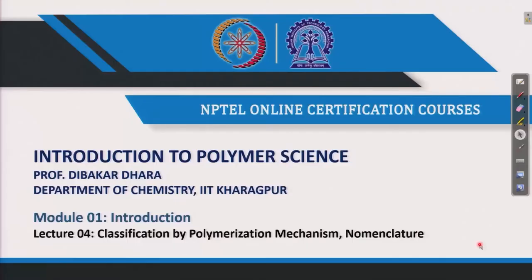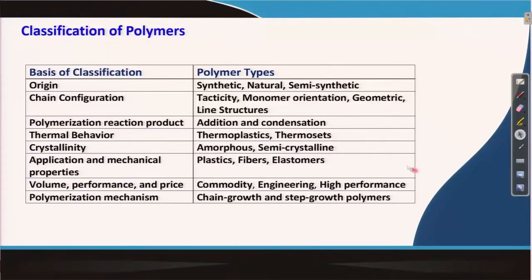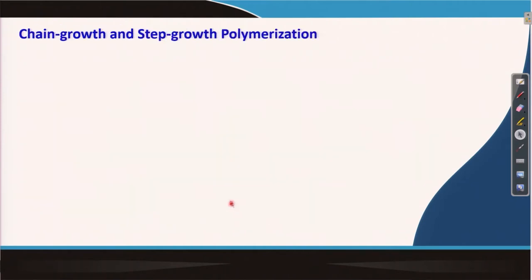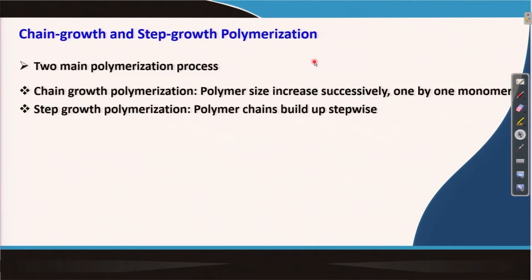Welcome back. In this lecture, I am going to discuss the classification by polymerization mechanism and nomenclature of polymers. We had discussed different classification methods and we are left with only one — polymerization mechanism — which is classified mainly by two processes: chain growth polymerization and step growth polymerization.